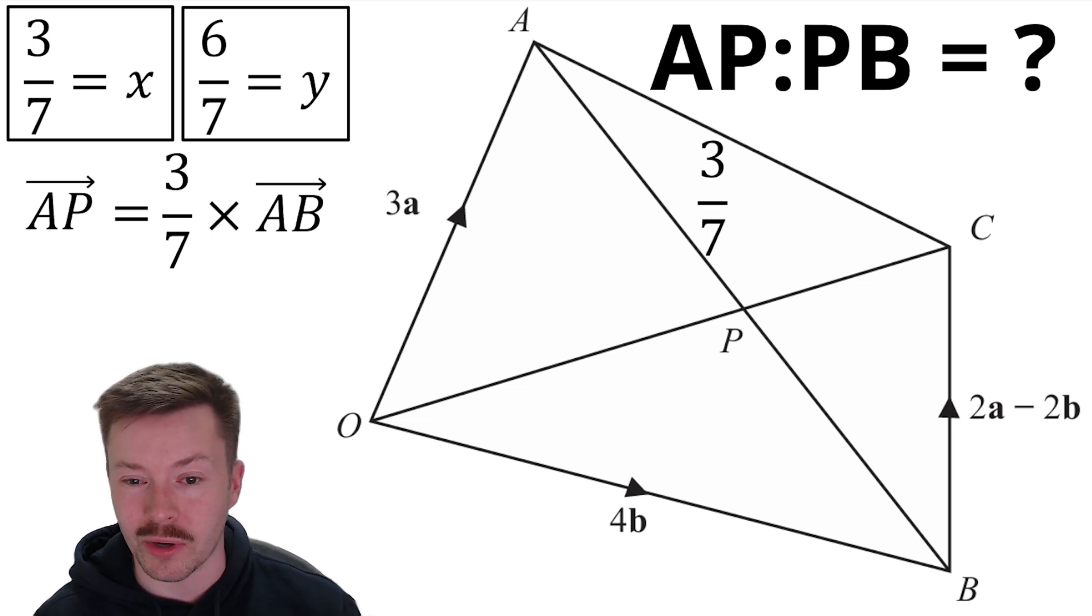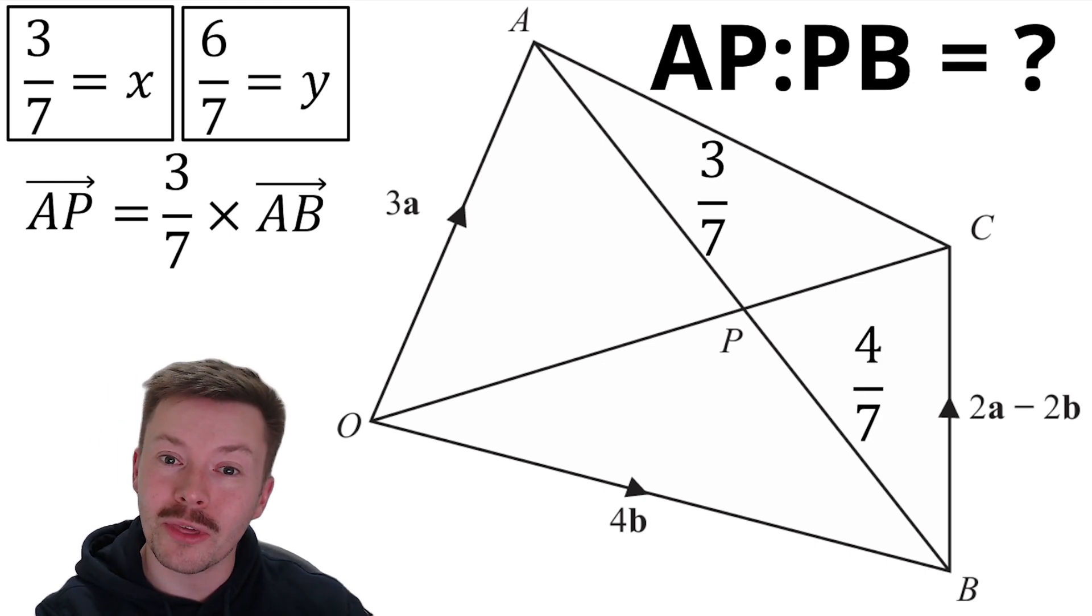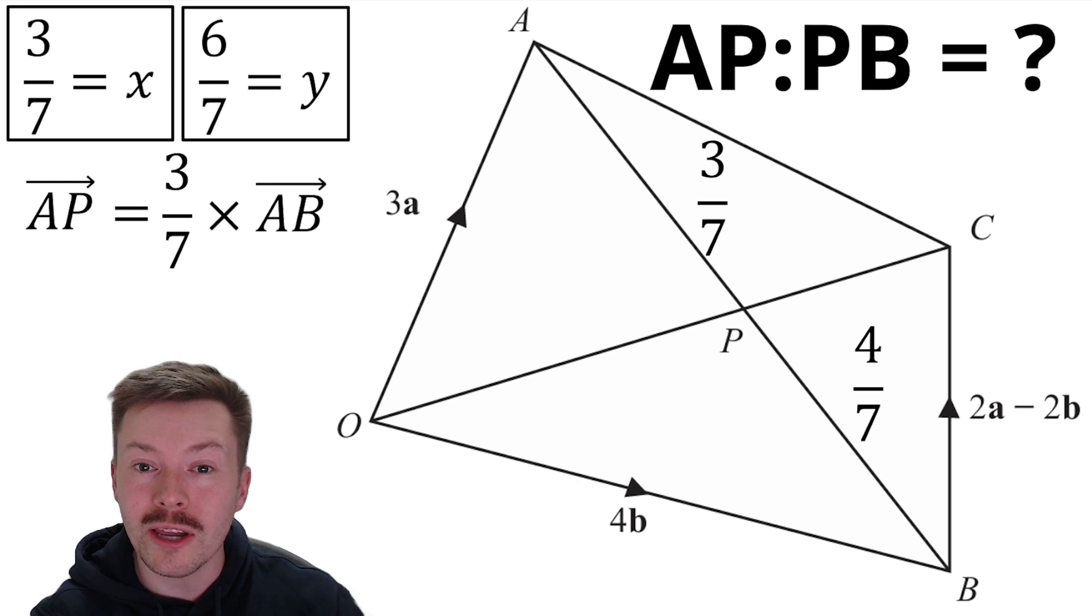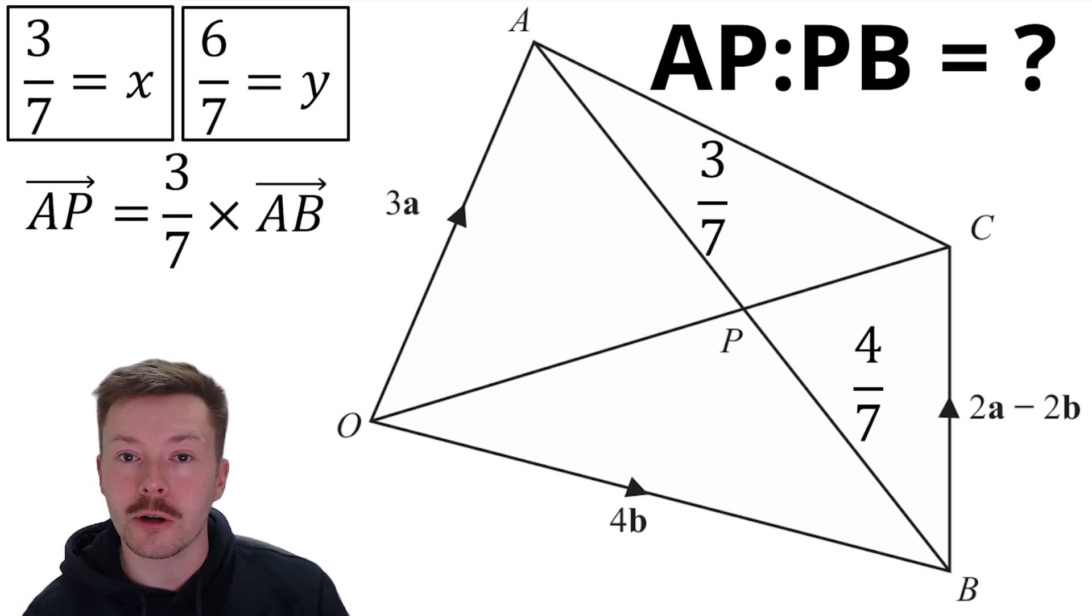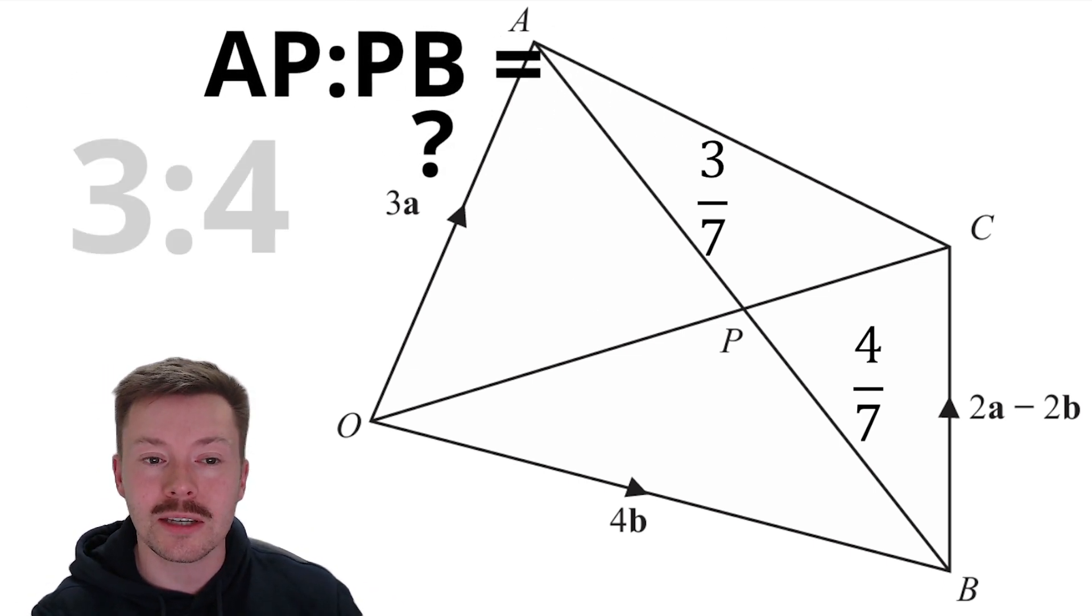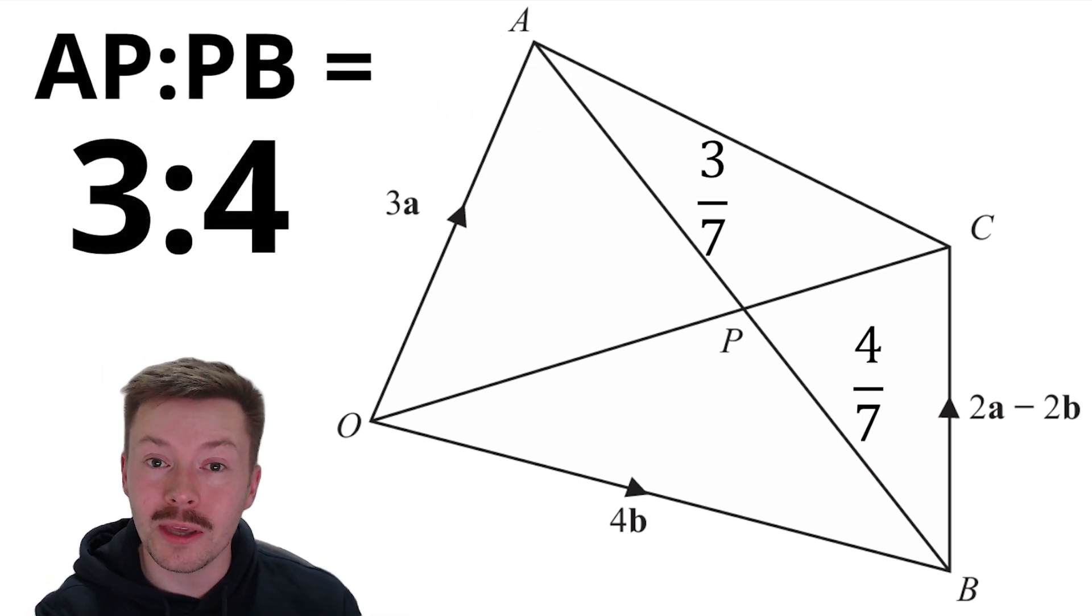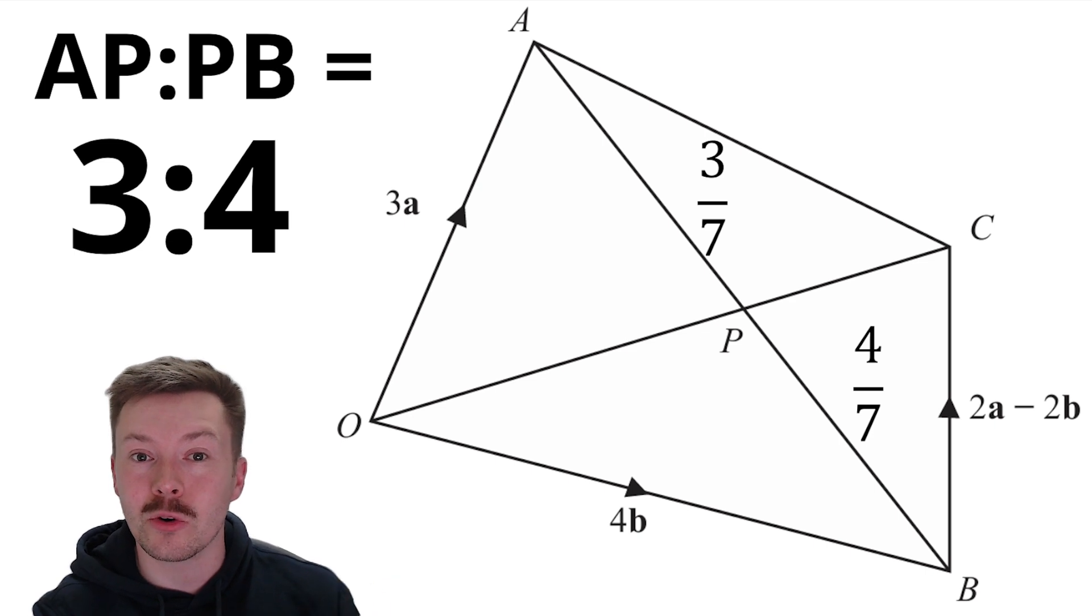What that means we can do is we can label that, and we'll put it on our diagram. So A to P is 3 sevenths of AB, which means that P to B is 4 sevenths. And that we can then use to give us our ratio using the numerators of these fractions, because ratio compares part to part, whereas fractions compare part to the whole. So that means AP to PB is 3 to 4.